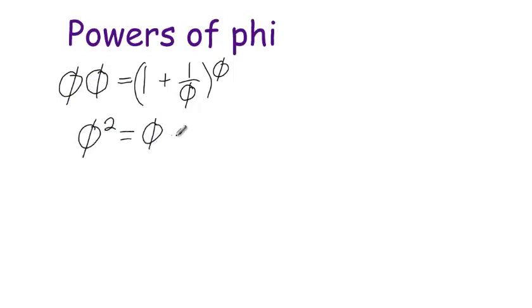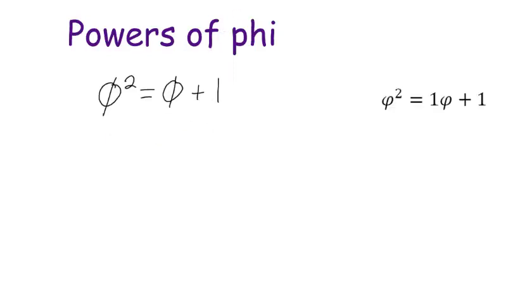Powers of phi. Let's review part of where we found phi. We figured out that phi was equal to 1 plus 1 over phi. And then we multiplied both sides of the equation by phi to get phi squared was equal to phi plus 1. Well, what I want to do is I want to be able to come up with these powers of phi. I want to be able to find what is phi cubed, what is phi to the fourth, and what is phi to the fifth, and so on.